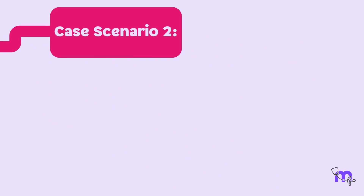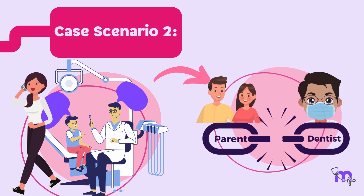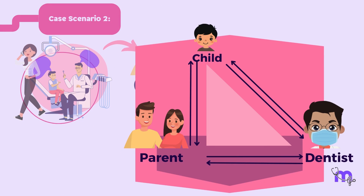In scenario 2, we have a negligent parent, disinterested in the treatment, who walks away during the treatment and is self-indulgent. The dentist's communication is limited to the child, and the parents are at the passive end. This scenario is depicted as a right-angled triangle.